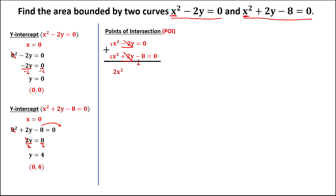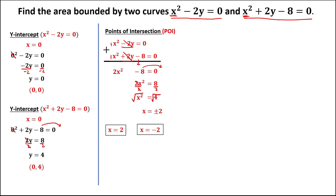Bring down negative 8 equals 0. To solve for x, transpose to the other side: positive 8. Divide both sides by 2, so x squared equals 4. Take the square root, so x equals the square root of 4, which gives positive and negative 2. We have two values: x equals positive 2 and x equals negative 2.